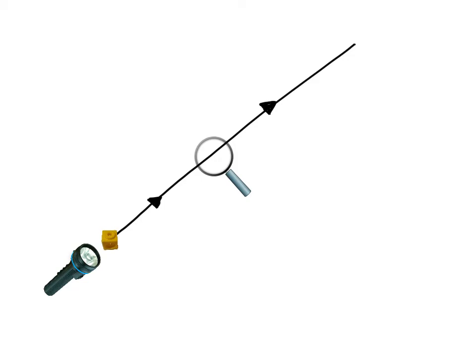Sometimes light energy travels in a straight line and passes through an object, such as glass. Here is a magnifying glass. It then carries on without any interruption. This energy has been transmitted.